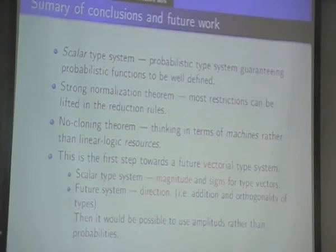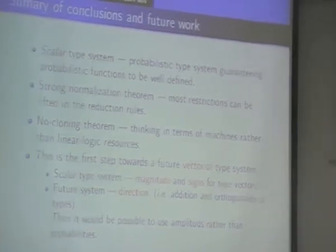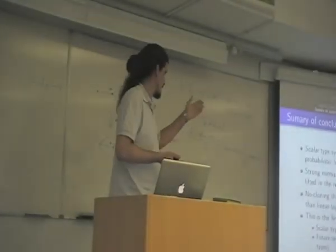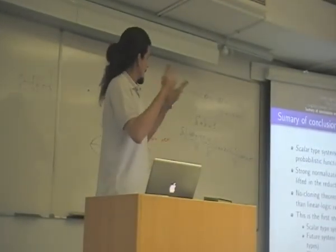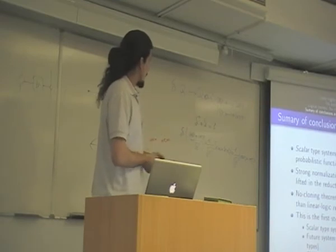This scalars system is dealing with magnitude of types for type vectors. First, we want to think in a vectorial space of types. So the future type system, we will try to handle directions. So we need to put additions and auto-identity checks to types. And when we have that, we will be able to think in amplitude rather than probabilities. That is the direction.